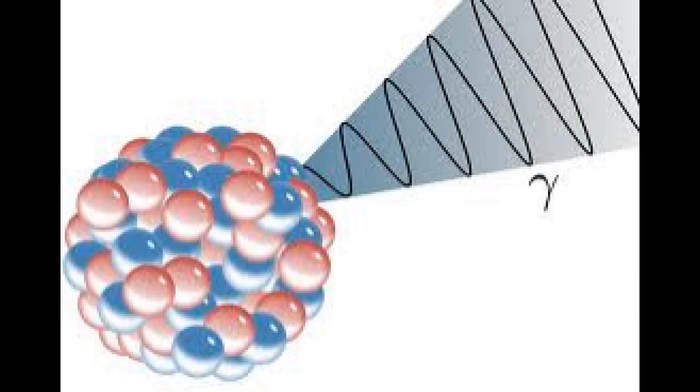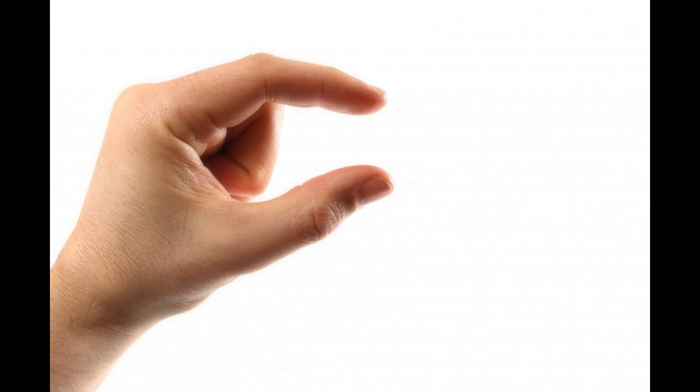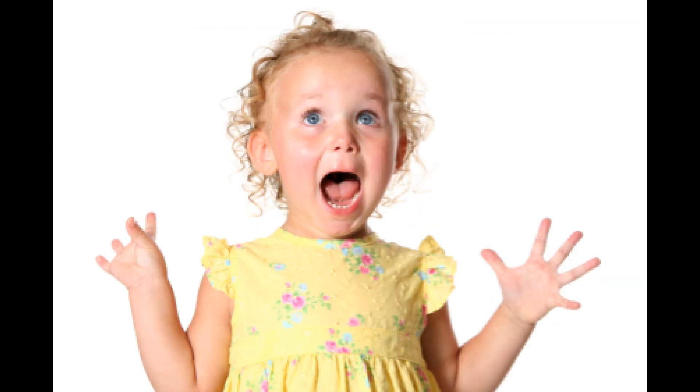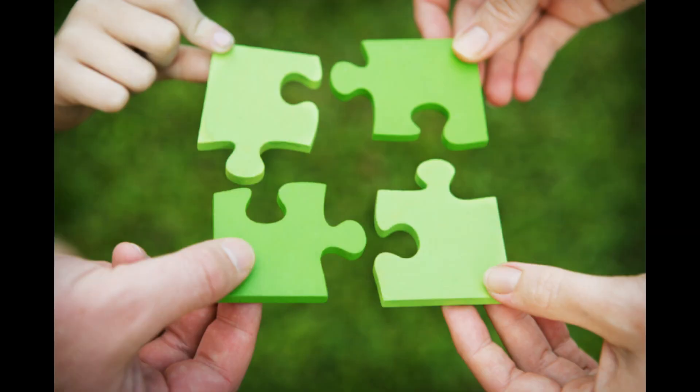Last on the list, we come to gamma rays. Anything smaller than one ten-billionth of a meter is considered a gamma ray. These are the most energetic photons, having no defined lower limit to their wavelength.